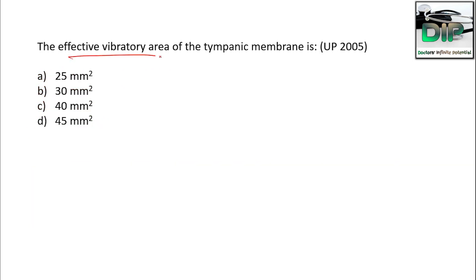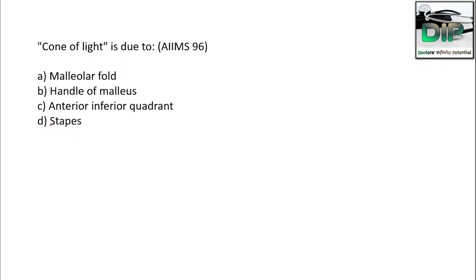The effective vibratory area of the tympanic membrane — options: A) 25 mm², B) 30 mm², C) 40 mm², D) 45 mm². We already discussed the functional area is 45 mm², which is close to 55 mm², so the answer is option D — 45 mm².